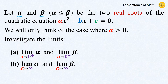Let alpha and beta be the two real roots of the quadratic equation ax squared plus bx plus c equals 0, where alpha is the smaller root and beta is the larger root. We are only dealing with the situation where the equation has real roots, and the leading coefficient a must be positive, because if a is 0 the equation is not quadratic, and if a is negative we can simply convert it into the more common case where a is positive.